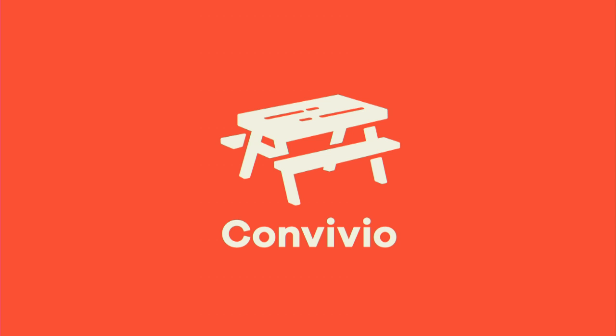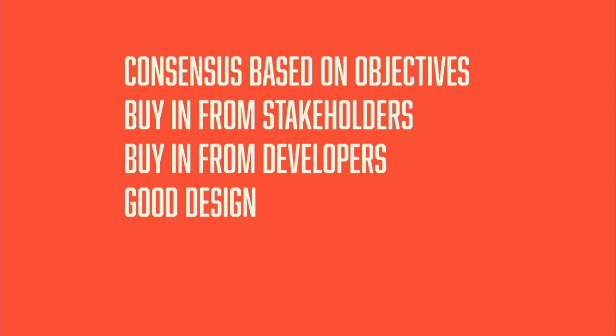This talk isn't about Convivio or why we have a picnic bench as a logo — that's a separate discussion. Let's talk about design processes and what makes a good design process. What you need is consensus based on objectives instead of opinions. You don't want to reach a subjective point where people just say "I want this" — you want the team sharing the same objectives and agreeing on what you're trying to achieve.